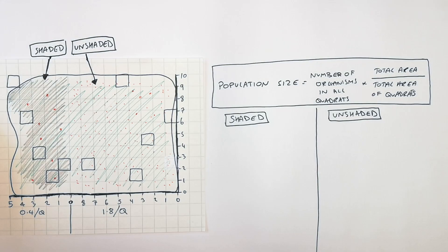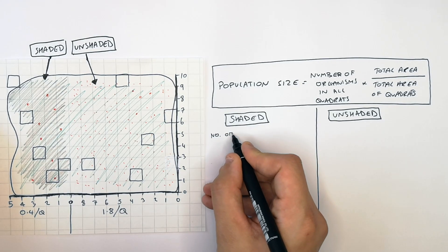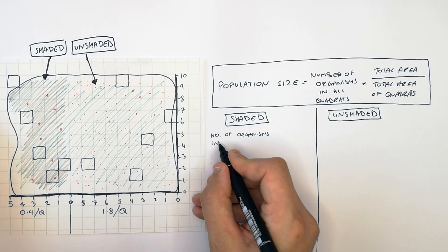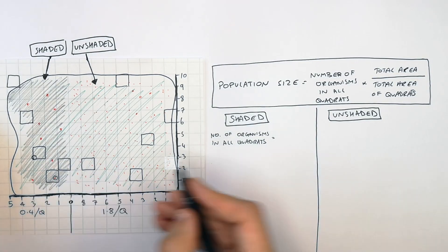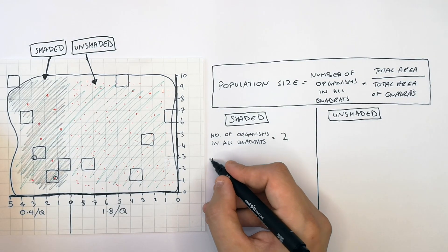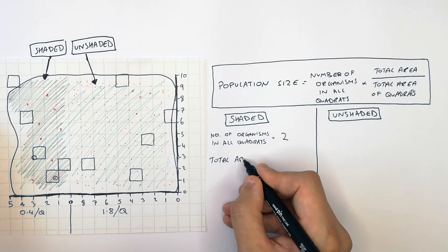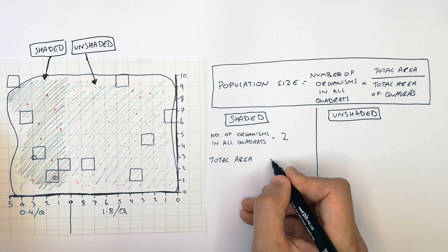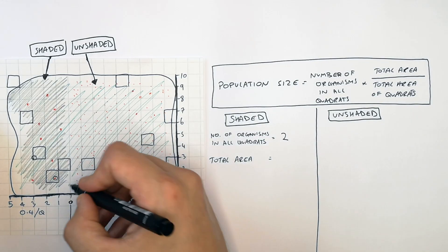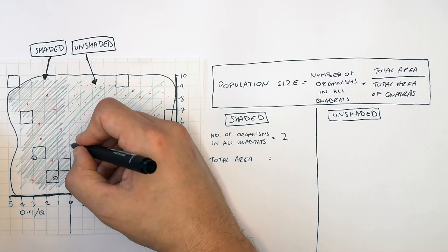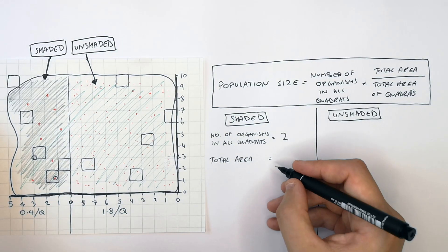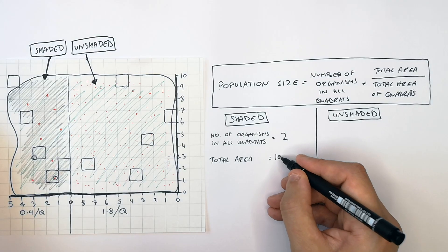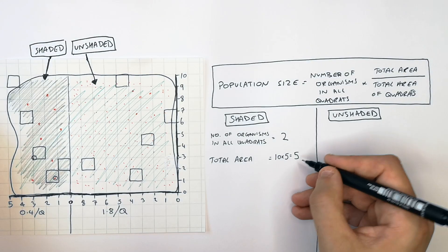For the shaded region we're now going to estimate the population size. Firstly, you must count the total number of organisms in all of your quadrats — in this case it is only two. Then calculate the total area of which there is shaded grass: that's going to be 10 meters up times by five meters across, giving an area of approximately 50 square meters.